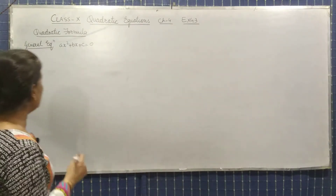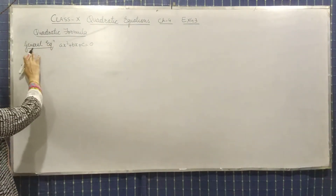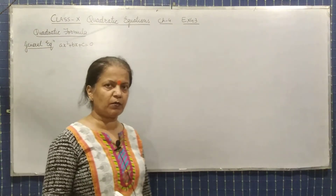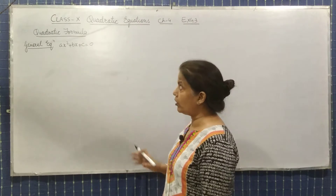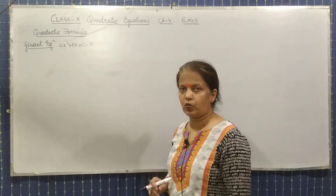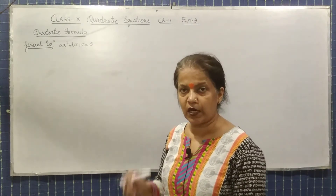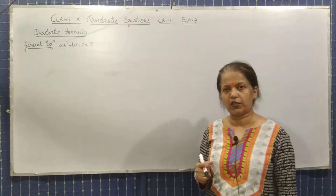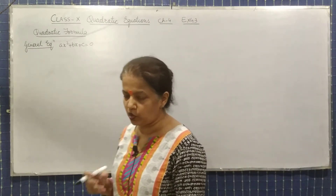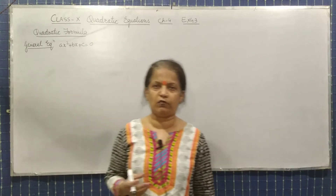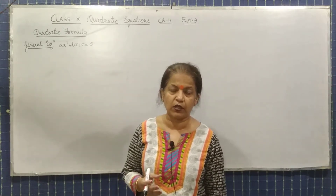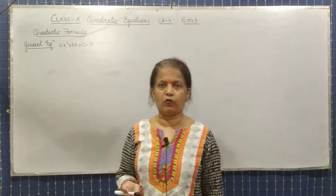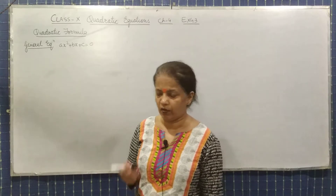According to the quadratic formula, suppose the general equation of a quadratic is ax² + bx + c. Now, according to the quadratic formula, we can find out the value of x. In the previous exercise, what did we do? By using factorization, we found the value of x. Now, by using the quadratic formula, how will we find the value?